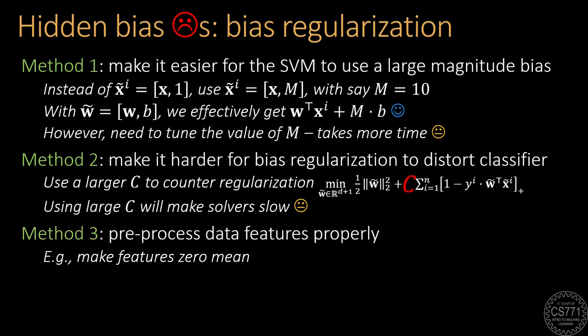The third way is something that we should do anyway and that is to preprocess data features properly, say by mean centering the data. The idea here is that if the data is closer to the origin, then it may not need a large magnitude bias term in the first place.